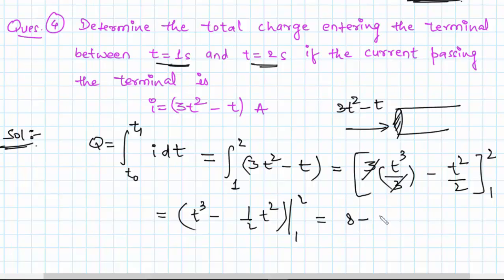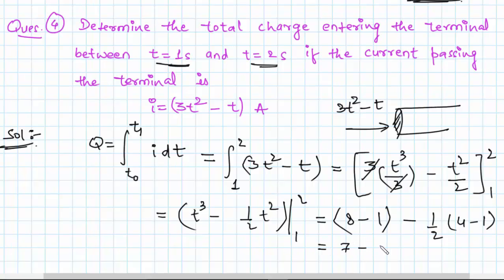This 3 and 3 cancel, giving t cubed minus one-half times t squared from 1 to 2. Putting in the values: 8 minus 1 minus one-half times 4 minus 1, which is 7 minus 1.5, giving 5.5 coulombs. This is the amount of charge entering through this terminal between t equals 1 second and t equals 2 seconds.